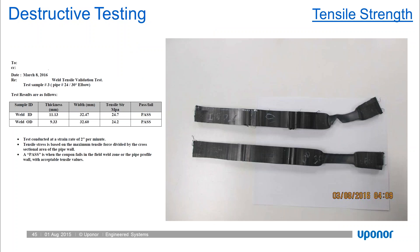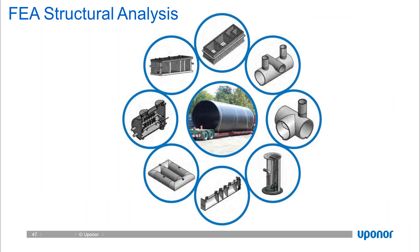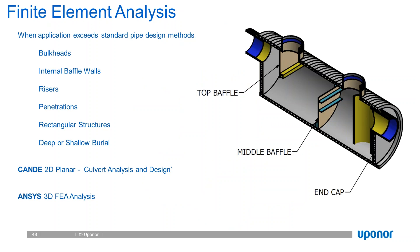We also do compressive strength tests from time to time as required. When we have horizontal applications and begin cutting into vessels—adding riser structures, bulkheads, or other applications—we must develop another means to calculate structural integrity, deflection, shear, and moment. This applies to manhole riser applications, internal baffle walls with hydrostatic pressure differential, bulkheads with penetrations, rectangular structures, and deep or shallow burial structures where we need a structural analysis beyond what PPI pipe vessel design covers.